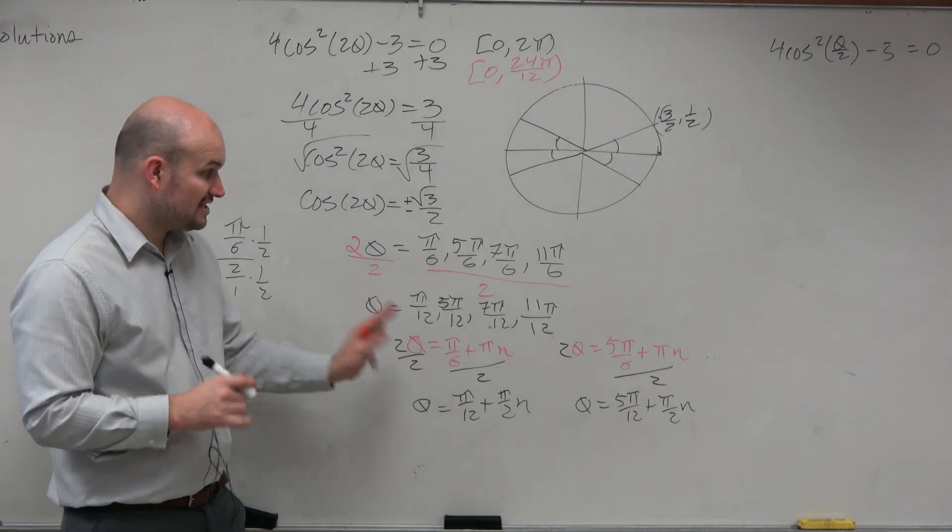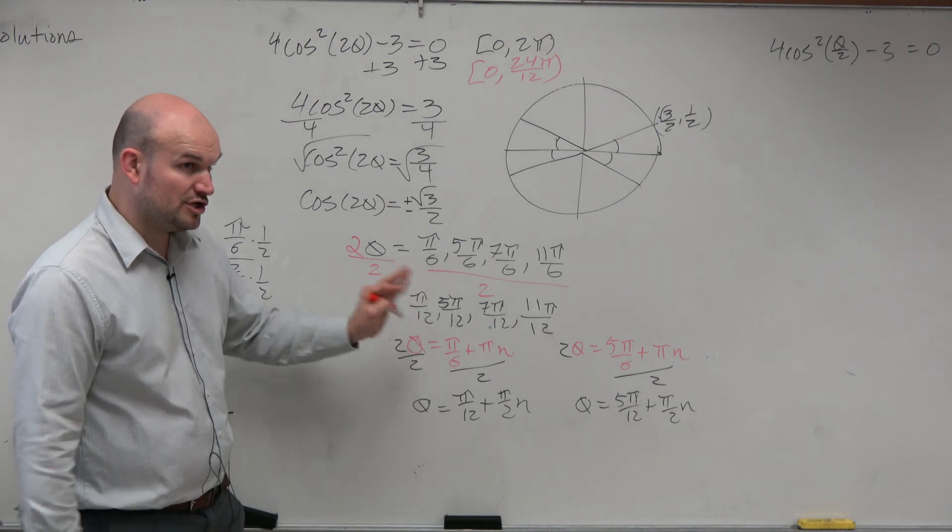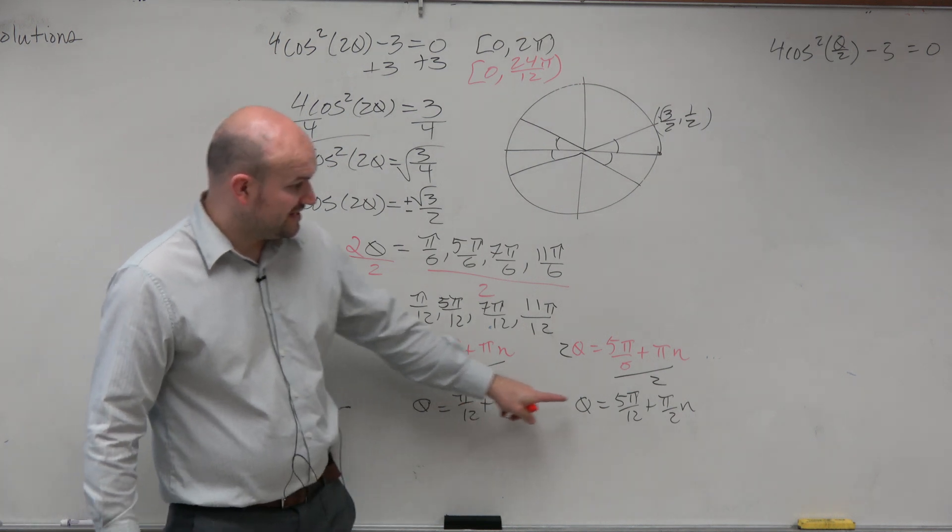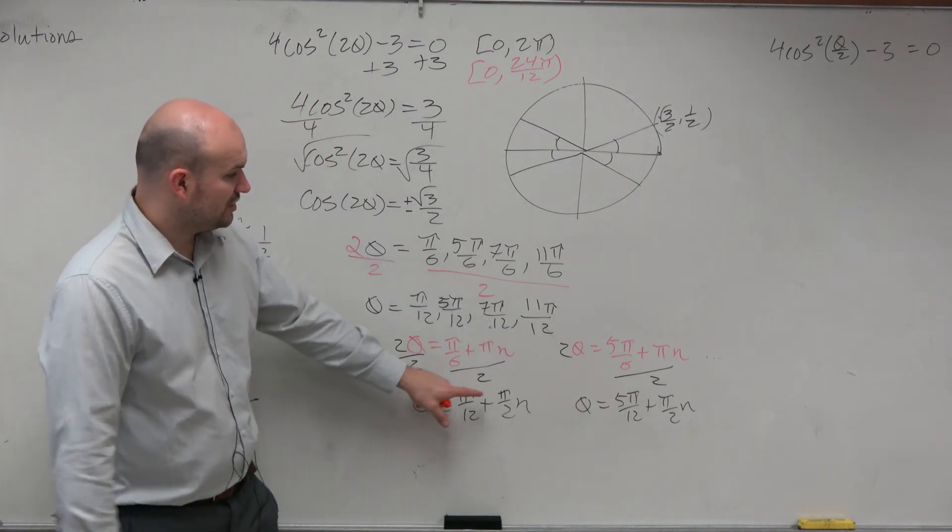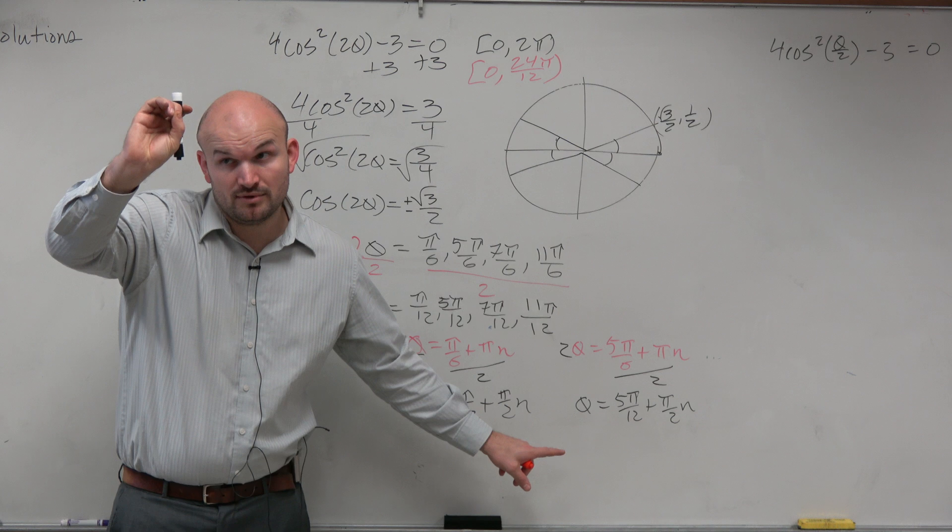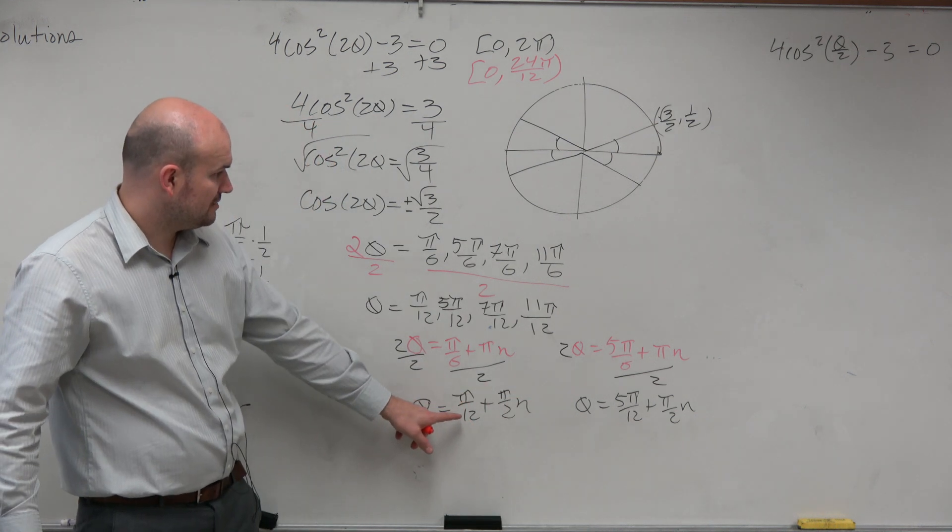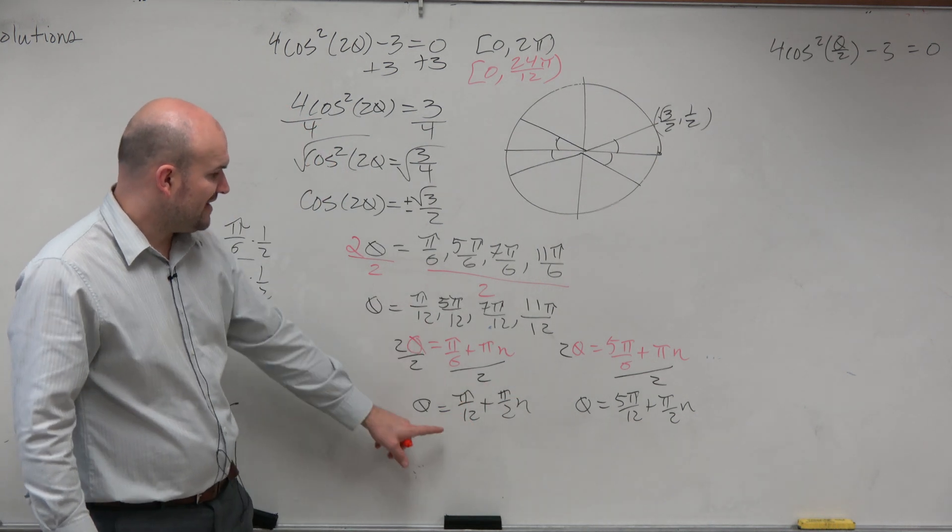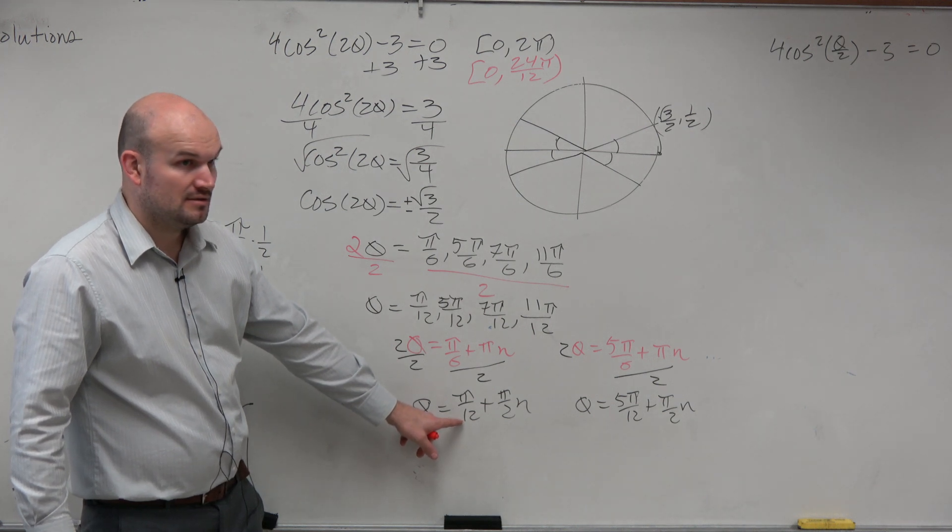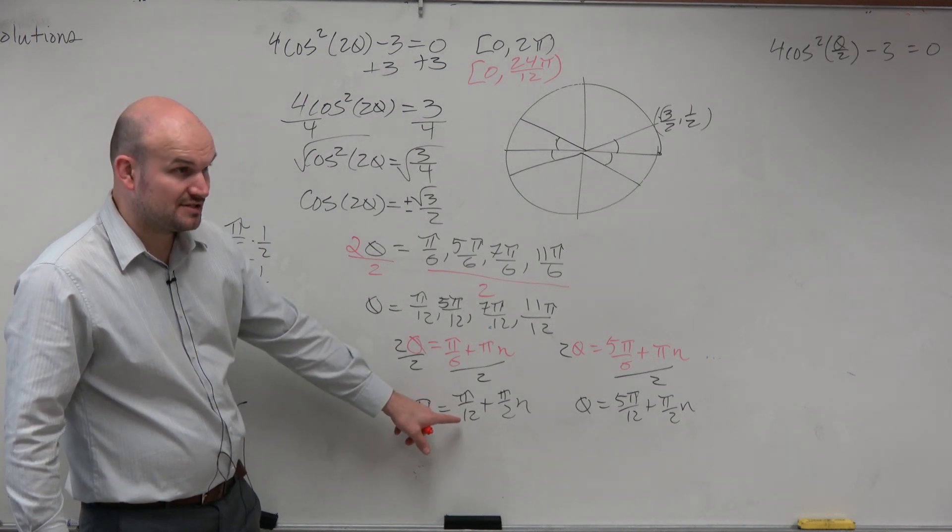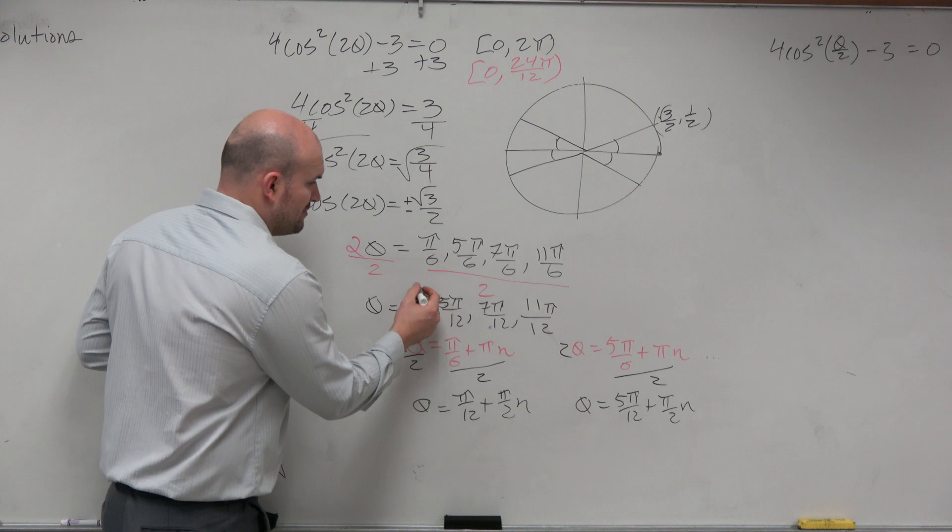But remember, we are not done with the answers. And I'm going to show you why we're not done. Again, remember, this represents all the solutions. So let's pretend n is 0. If n is 0, what is my answer? If n is 0, what's one of my answers? Pi over 12. Do we already have that solution? Yeah, so we're good there.